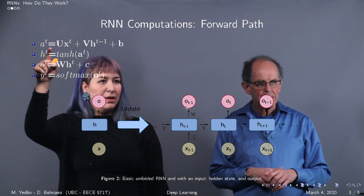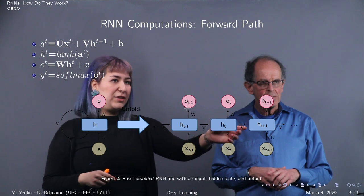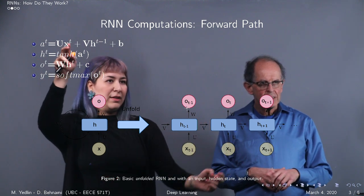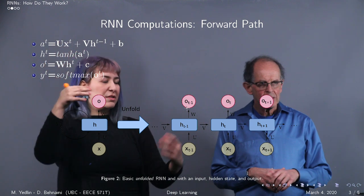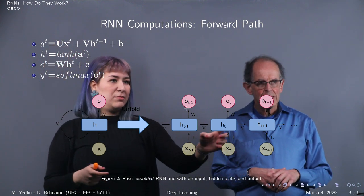So at any time step, what's really going into the h of t is a combination of some function of the input, u of x. x is, again, the input, and u is some parameters that are associated with this connection right here. So that's the first term.